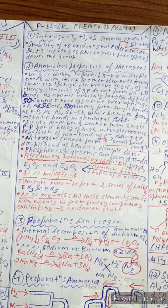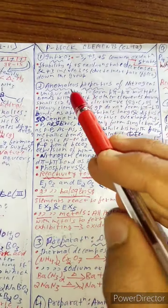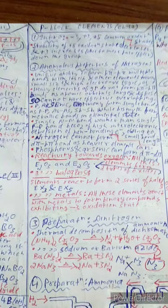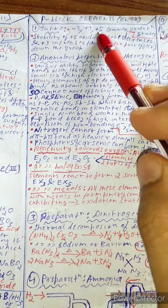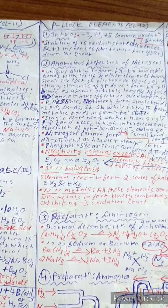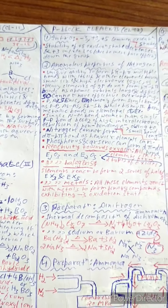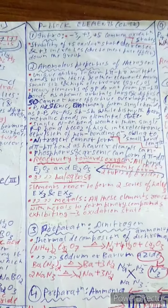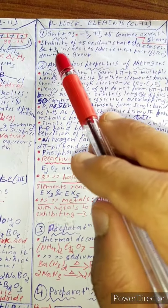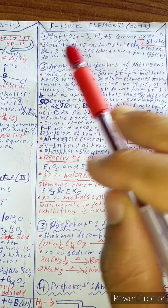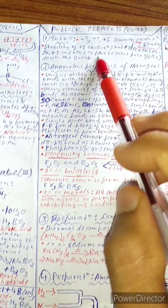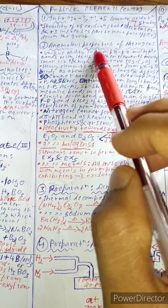Now let's start Class 12 P-Block, which is very important. The common oxidation states of these p-block elements are −3, +3 and +5. The stability of the +5 oxidation state decreases and +3 increases due to the inert pair effect going down the group.